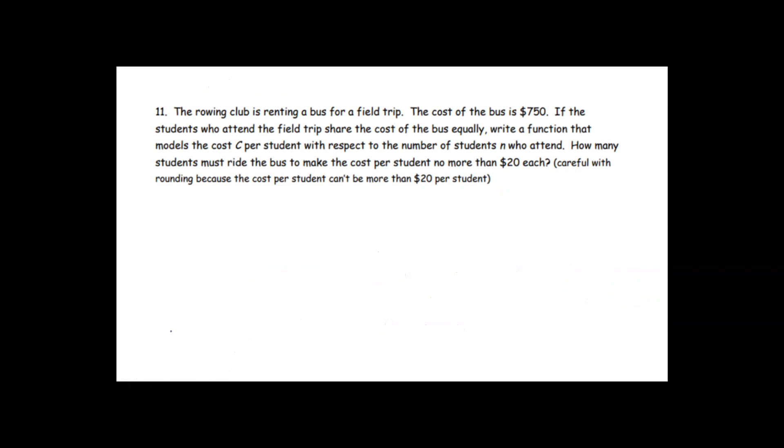Let's look at problem number 11. The rowing club is renting a bus for a field trip. The cost of the bus is $7.50. If the students who attend the field trip share the cost of the bus equally, write a function that represents the cost C per student with respect to the number of students N who attend. So they're going to divide up the cost of the bus. So the cost per student is going to be the $7.50 divided by N the number of students. That's your function that you're looking for.